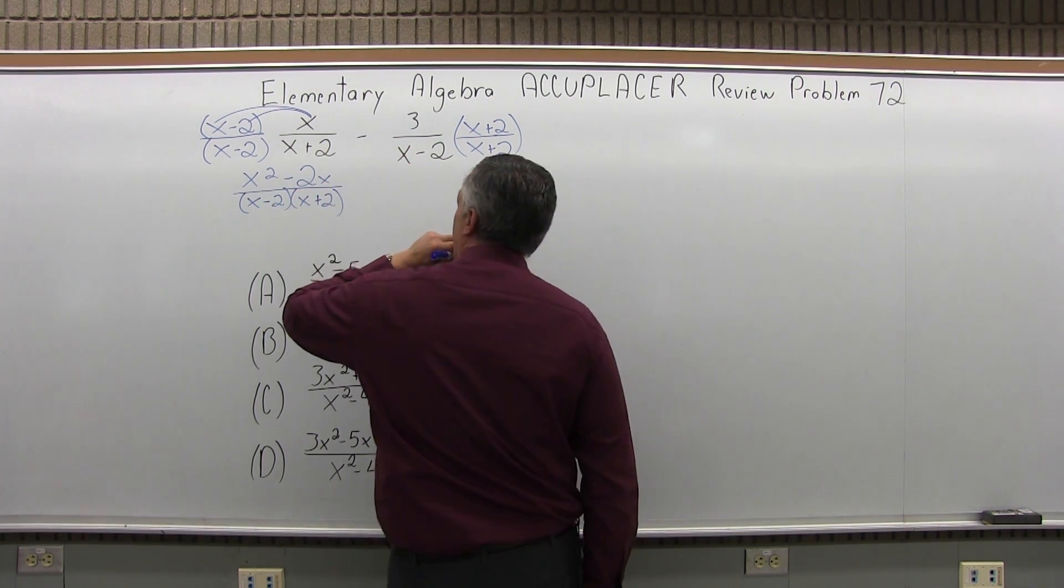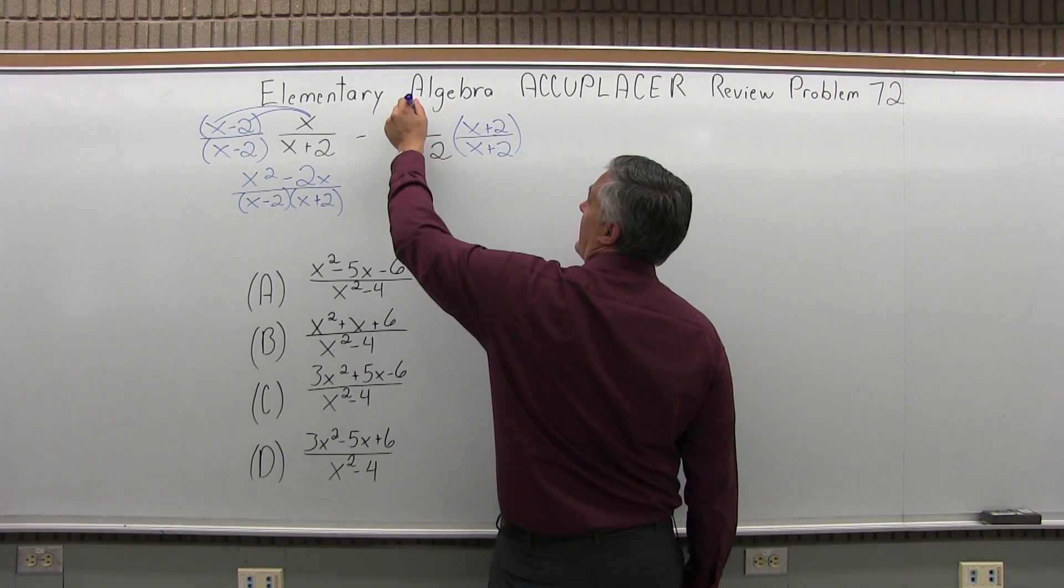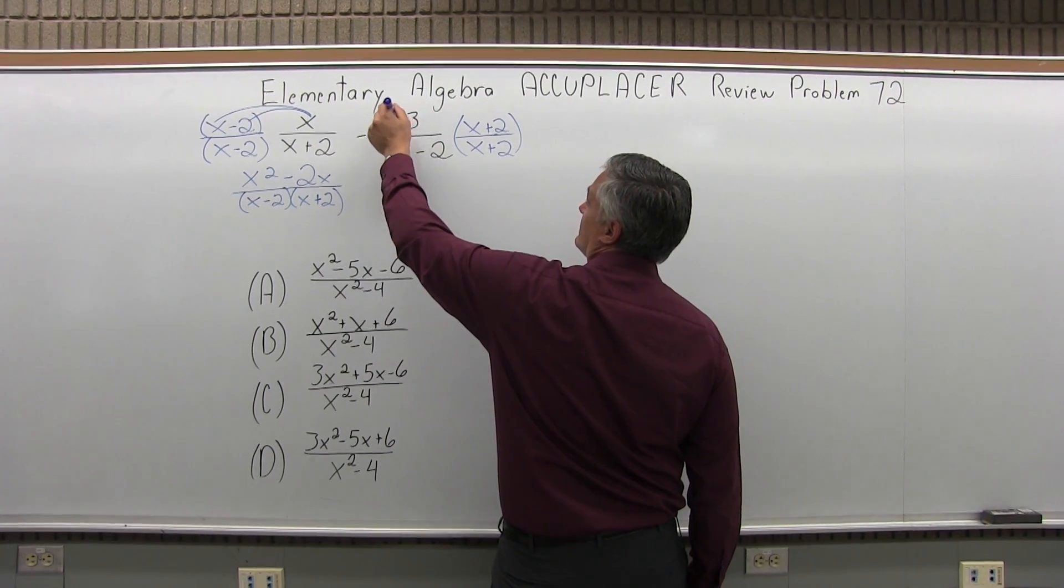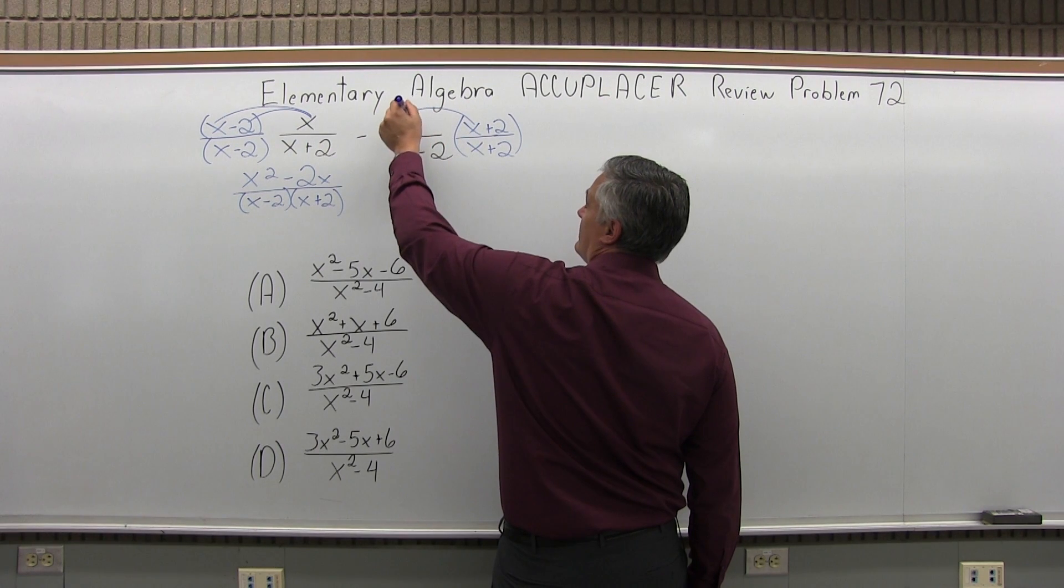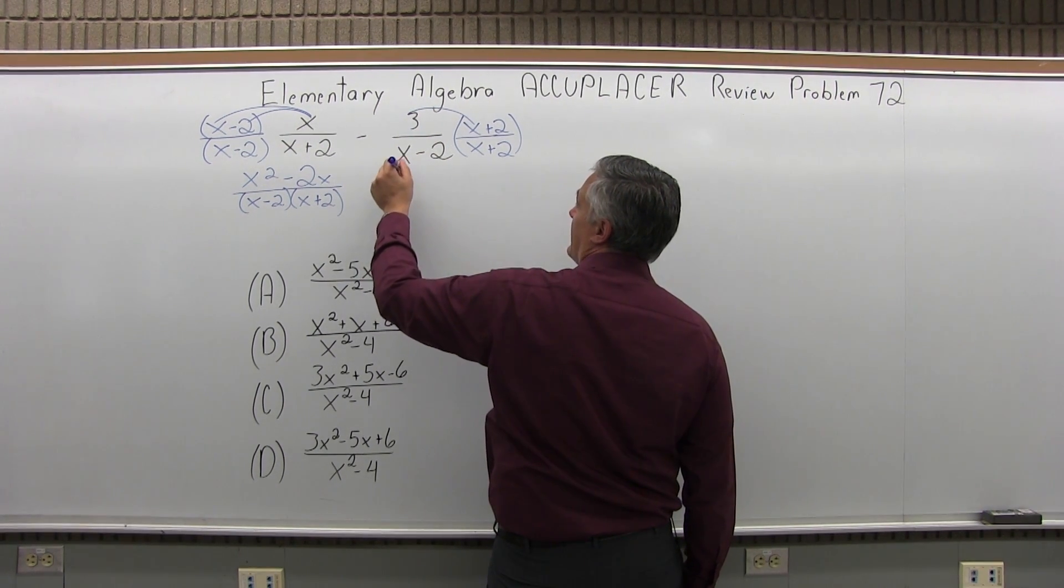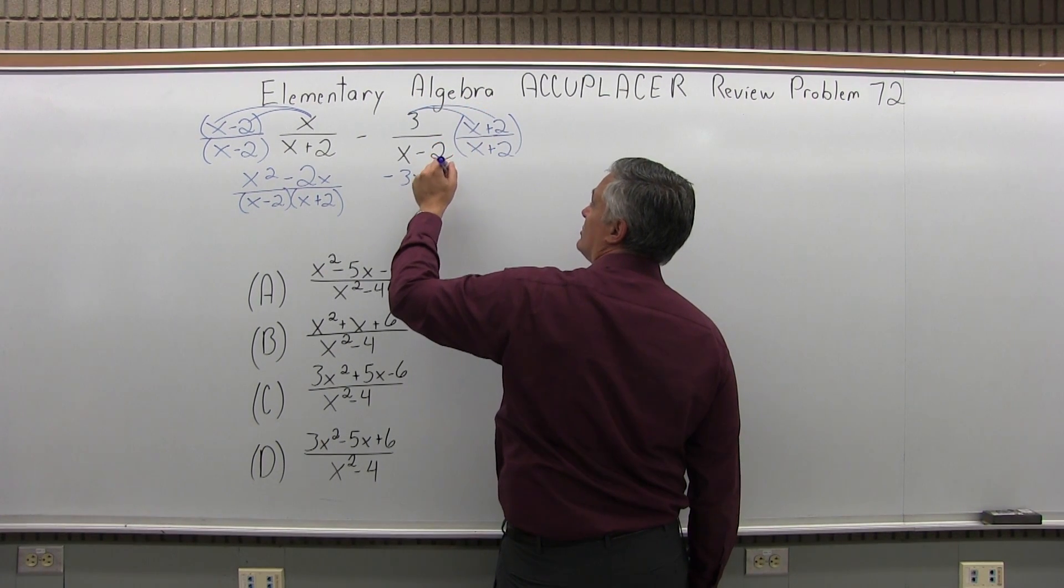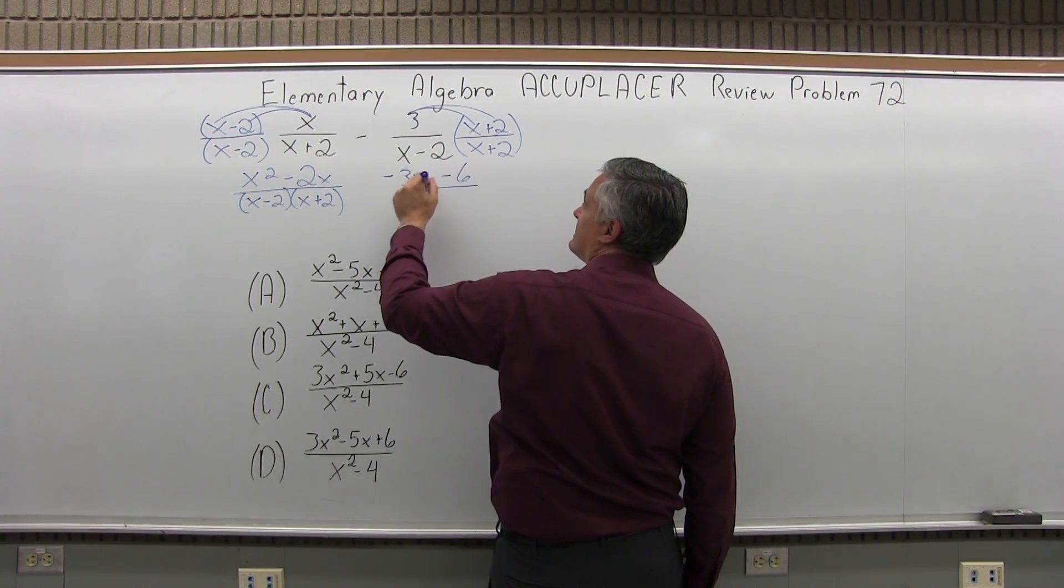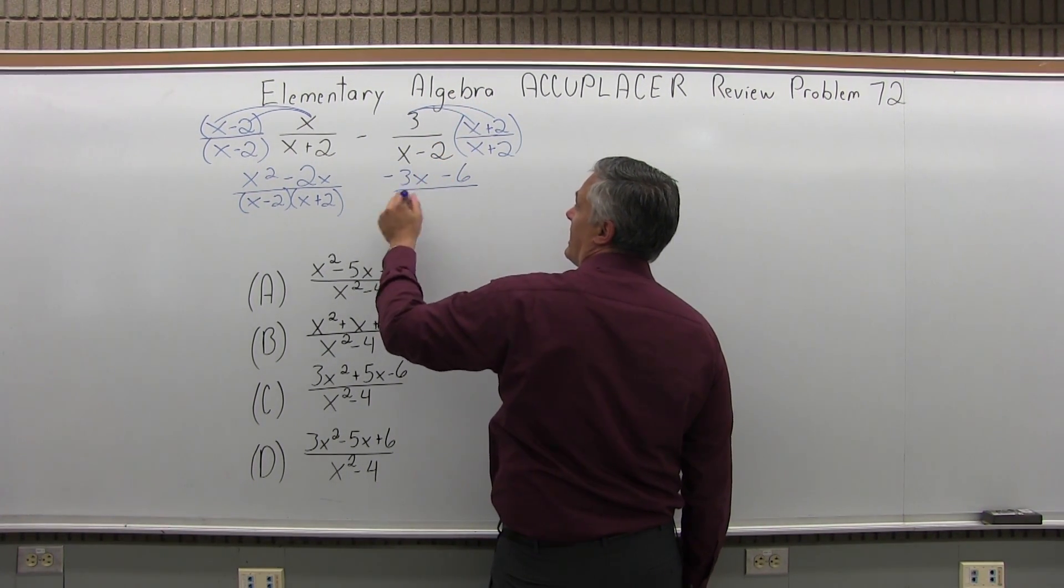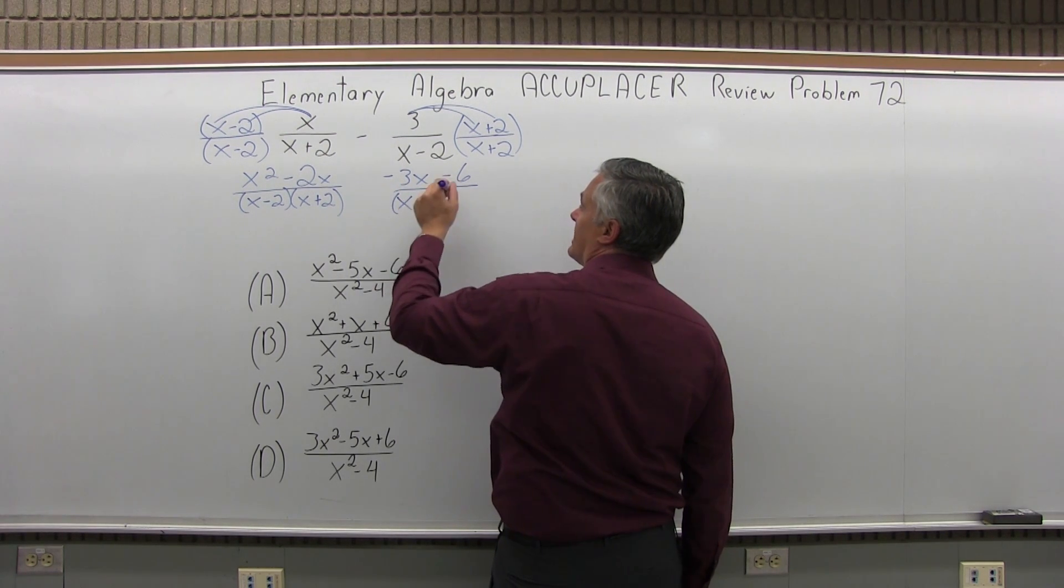Now the other fraction, notice the 3 here is negative. So negative 3 times x will be negative 3x. And then negative 3 times 2 is negative 6. And same denominator, x minus 2 times x plus 2.